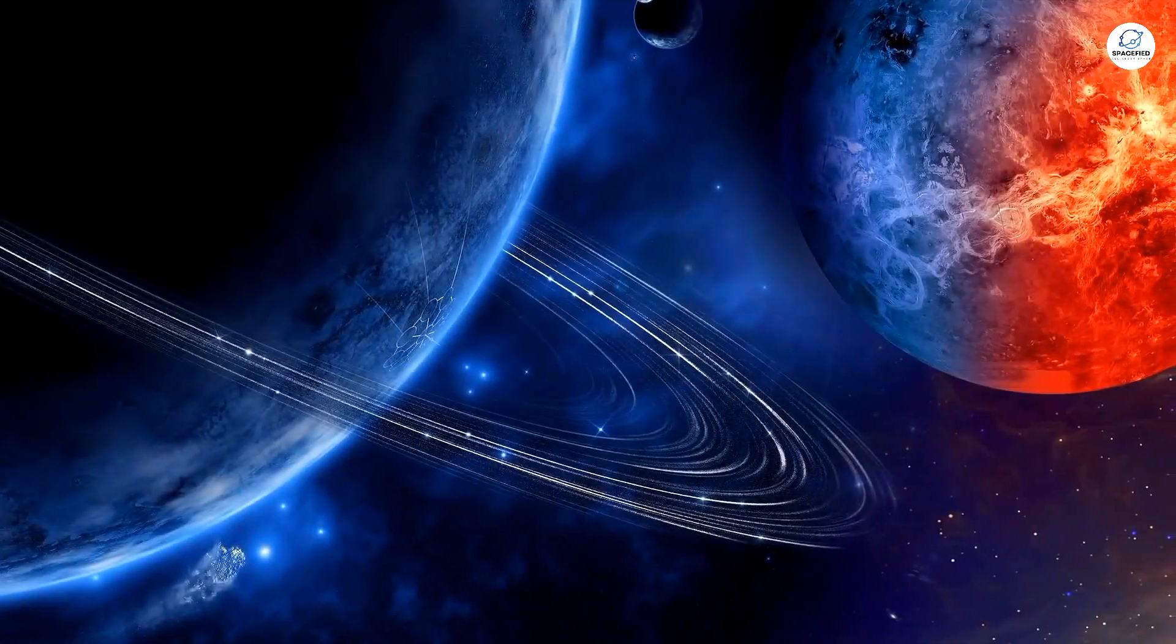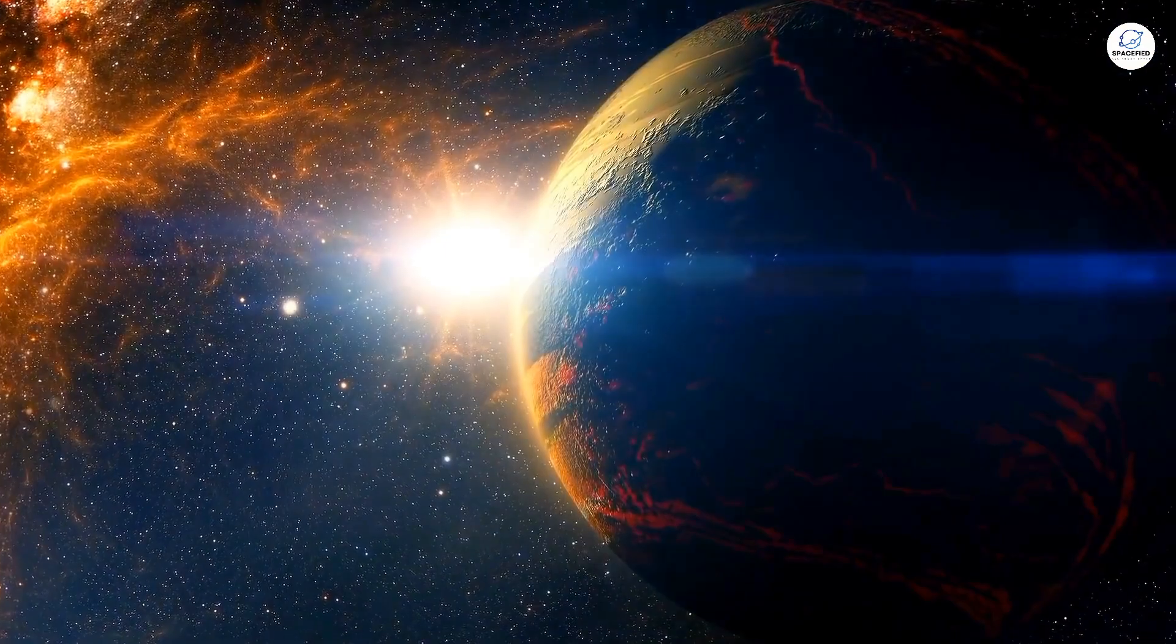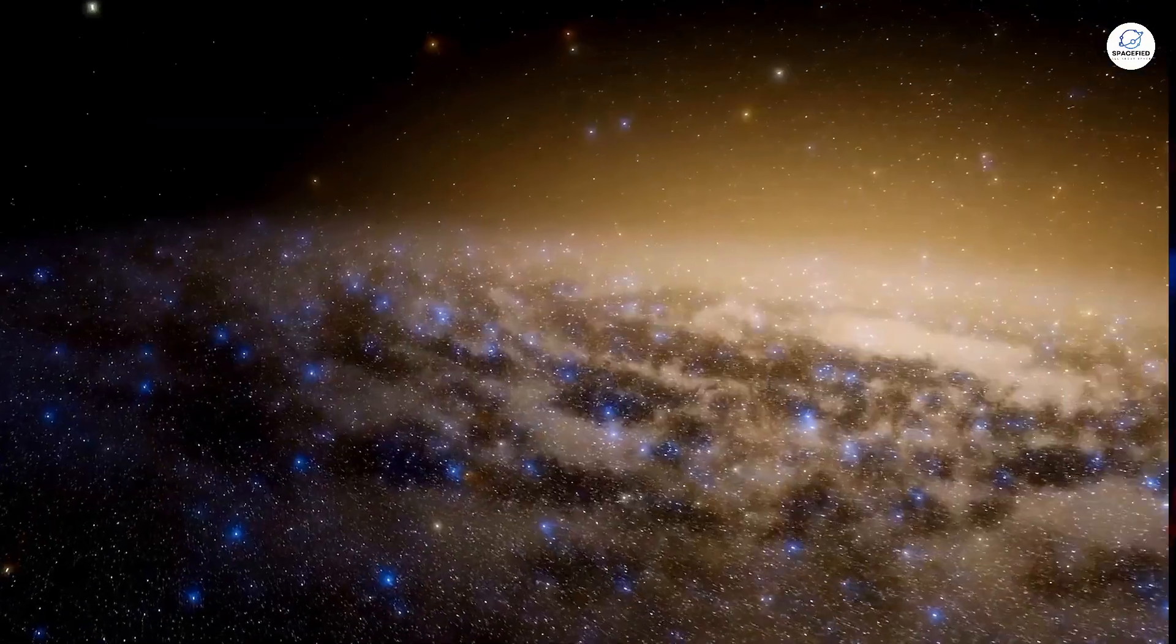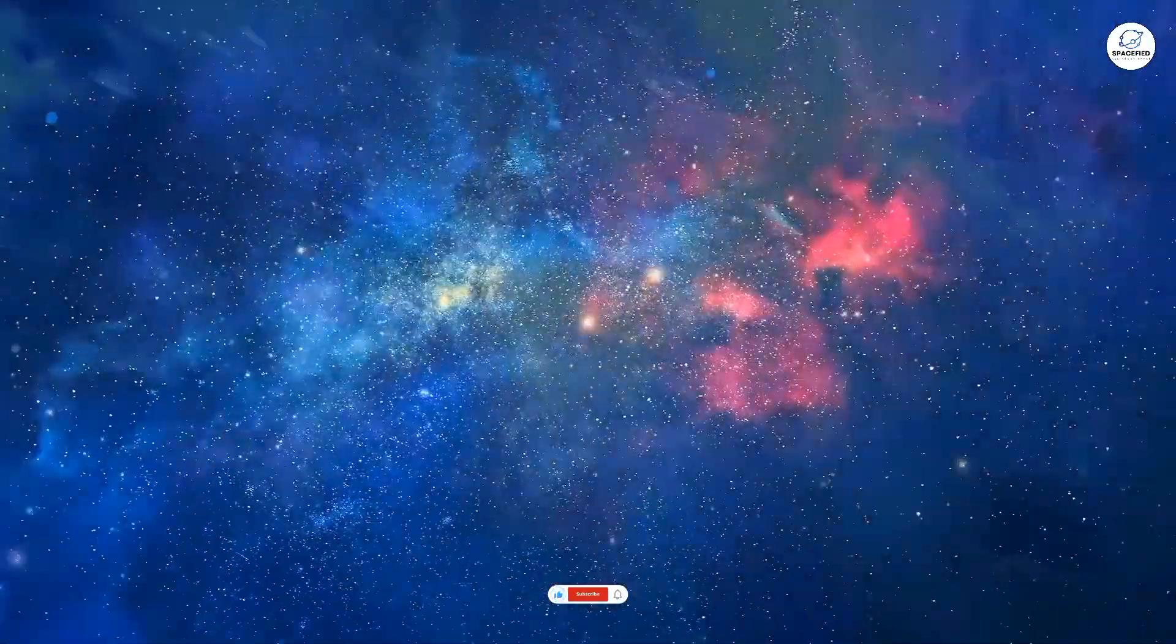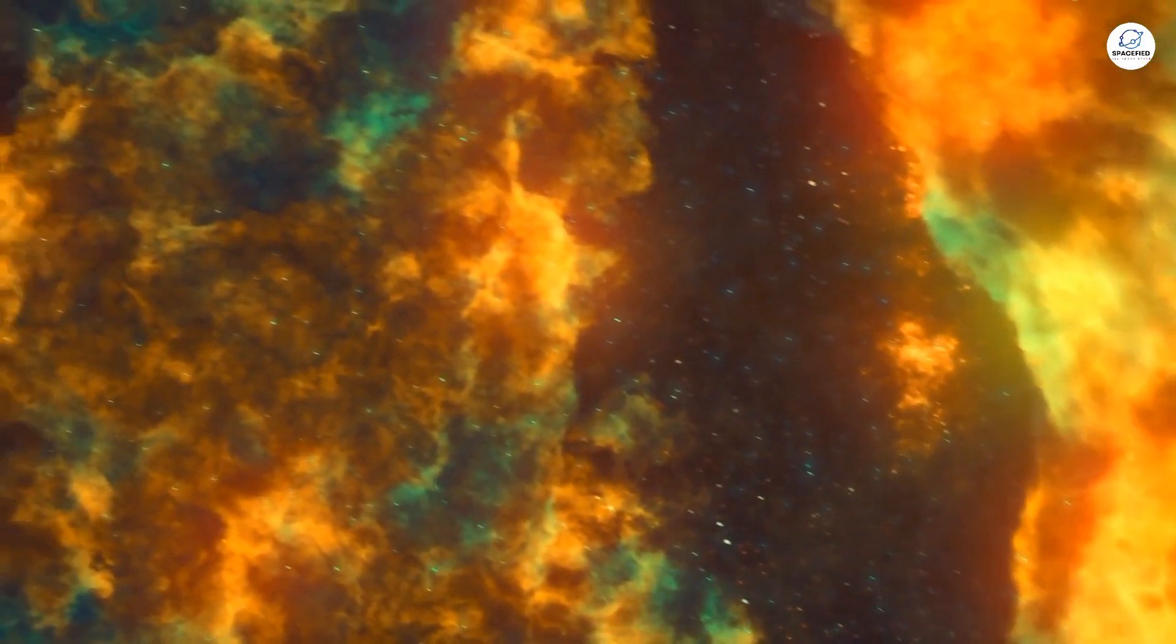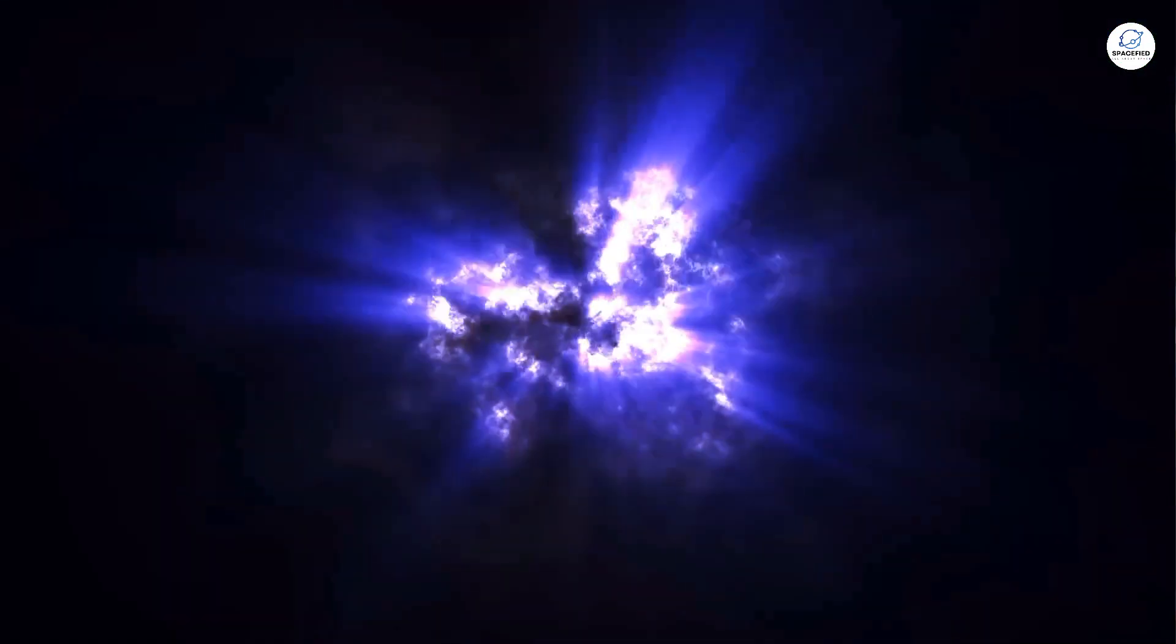This planet, which doesn't even have a catchy name yet, let's call it Terraria for now, is located in a region of space that's teeming with young stars and swirling clouds of gas and dust. It's a chaotic, violent environment, the kind of place where planets are born and destroyed in the blink of an eye.